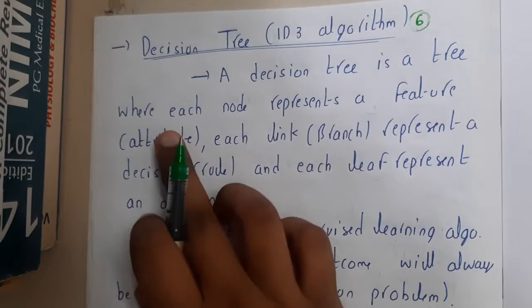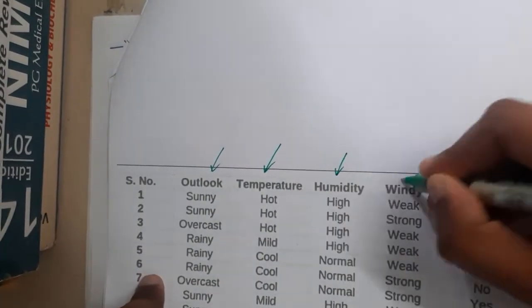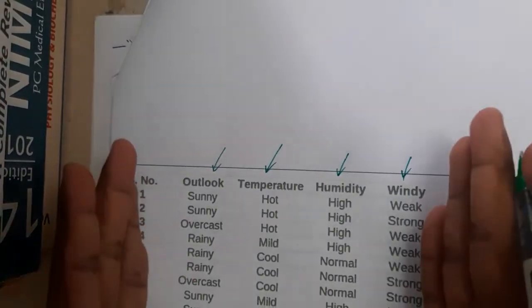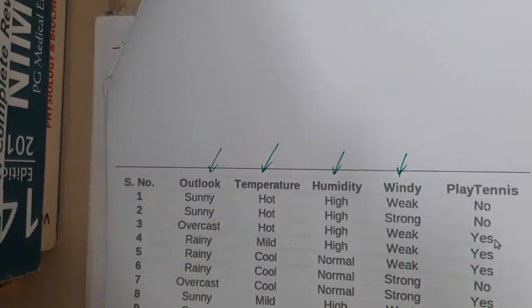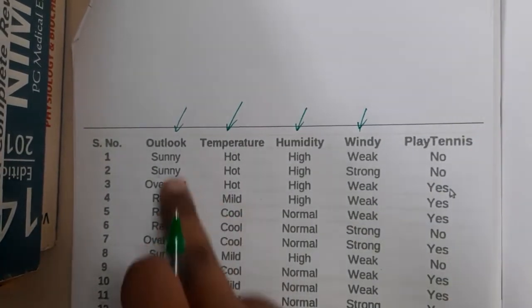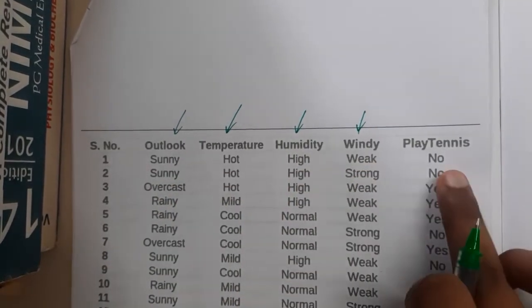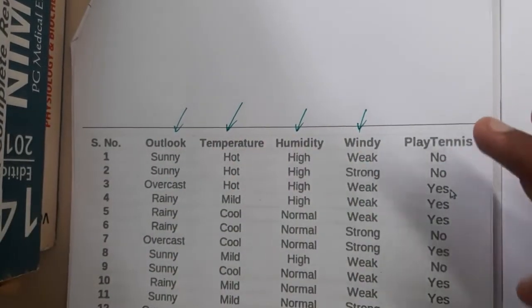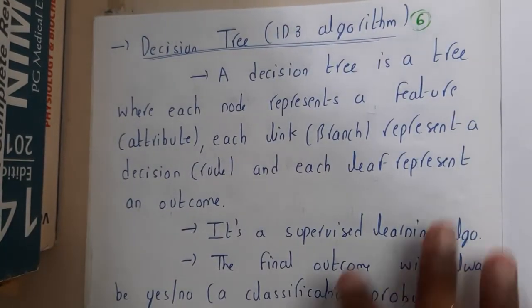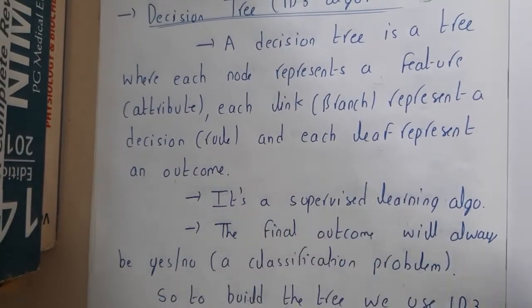So a decision tree is a tree where each node represents a feature or attribute — for example, outlook, temperature, humidity, and windy. These are called attributes or features about the event we are checking. Here the goal is: do you want to play tennis if it is sunny, hot, humidity is high, and wind is weak? Based on these decisions, you are deciding whether to play tennis or not. Each link is called a branch, representing a decision rule, and each leaf represents the outcome.